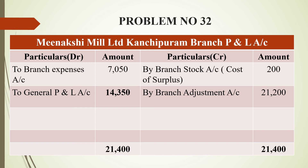Next is the branch adjustment account, where we have gross profit. On the credit side, by branch adjustment account Rs. 21,200. After totalling, we get a balancing figure of Rs. 14,350 as general profit and loss account. The grand total is Rs. 21,400.